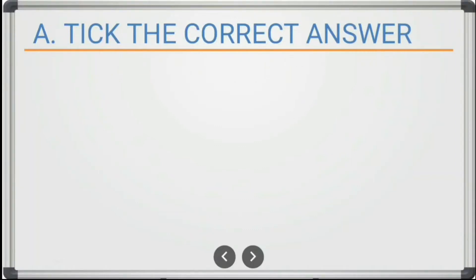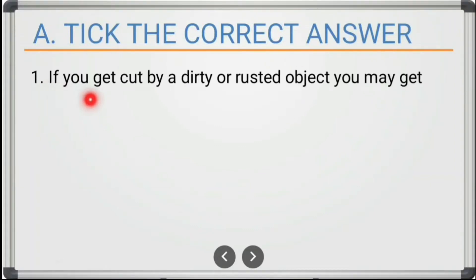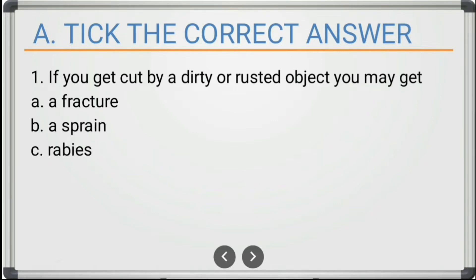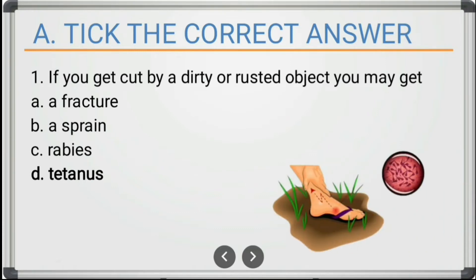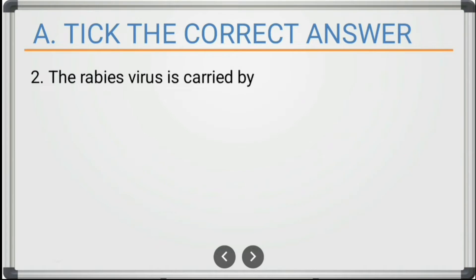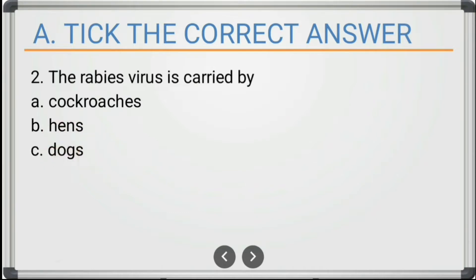First question: if you get cut by a dirty or rusted object, you may get — the options are: a fracture, a sprain, rabies, or tetanus. The correct answer is tetanus.